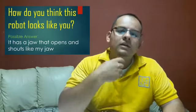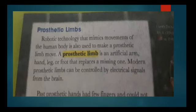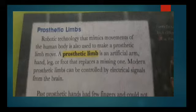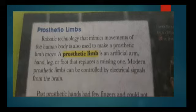On page 242, the topic is 'Prosthetic Limbs.' Robotic technology that mimics movements of the human body is also used to make a prosthetic limb move. A prosthetic limb is an artificial arm, hand, leg, or foot that replaces a missing one. Modern prosthetic limbs can be controlled by electrical signals from the brain.